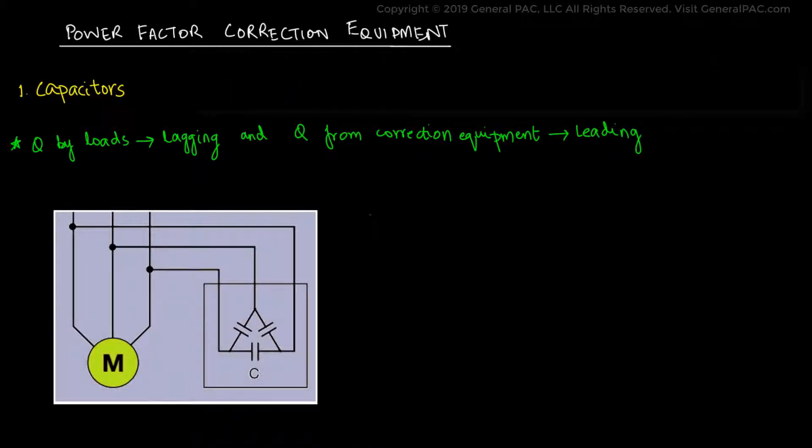First up, we have the static capacitor, which are the simplest form of power factor correction still in use today. This method consists of inserting a capacitor bank in parallel with the incoming terminals of the inductive load. Once inserted, the reactive power by the inductive load is supplied by the capacitor bank, which neutralizes the effect and improves the power factor magnitude.